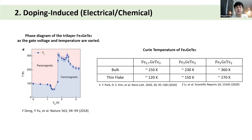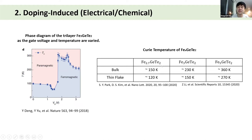By tuning the doping level with a gate voltage, you can tune the critical temperature of the 2D van der Waals material. You can also change the composition ratio of the transition metal. For example, in Fe₃GeTe₂, the normal material shows a critical temperature of about 230 Kelvin in bulk and 150 Kelvin in thin flake. Adding hole doping decreases the critical temperature, but adding electron doping increases the critical temperature.